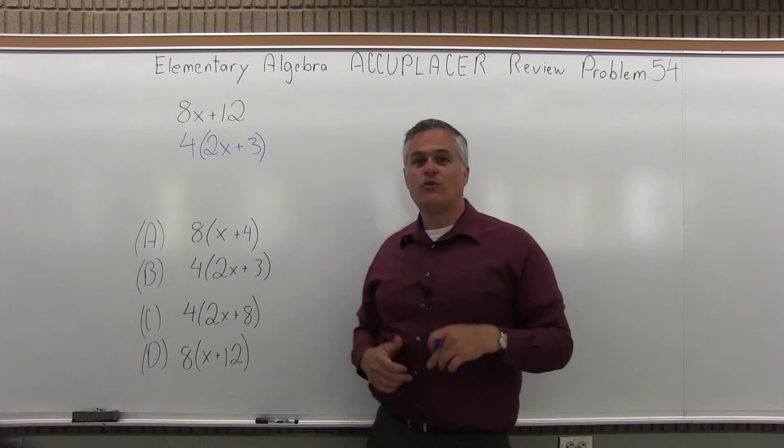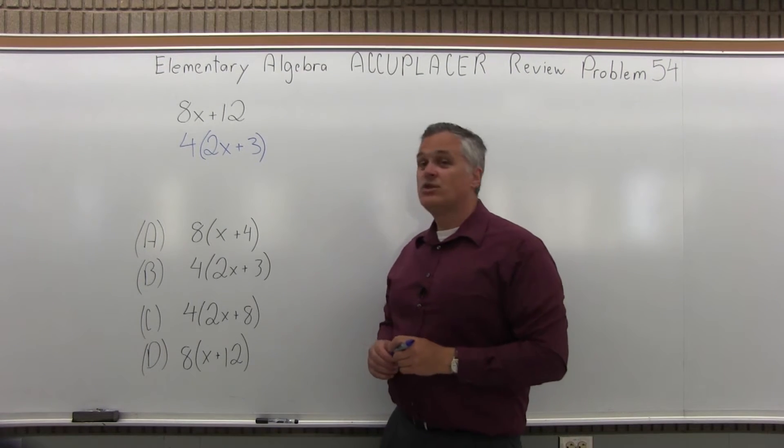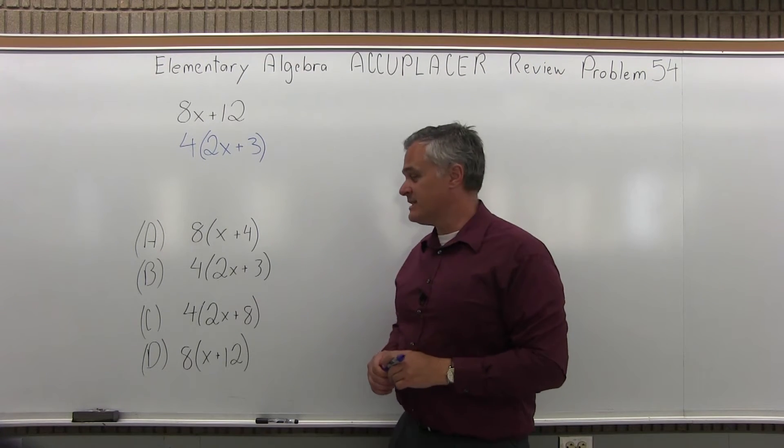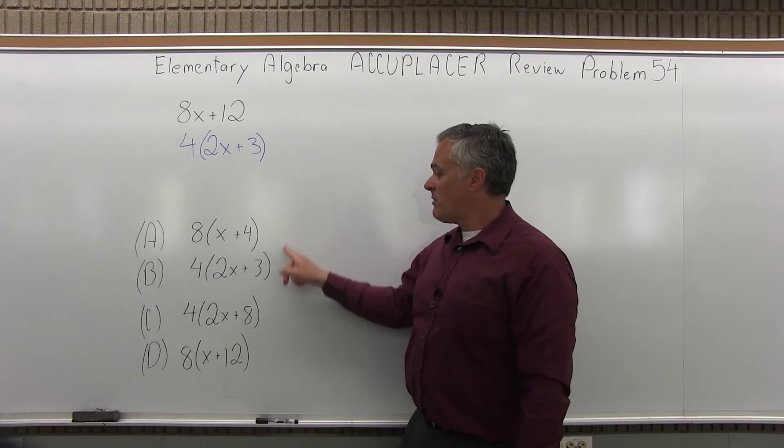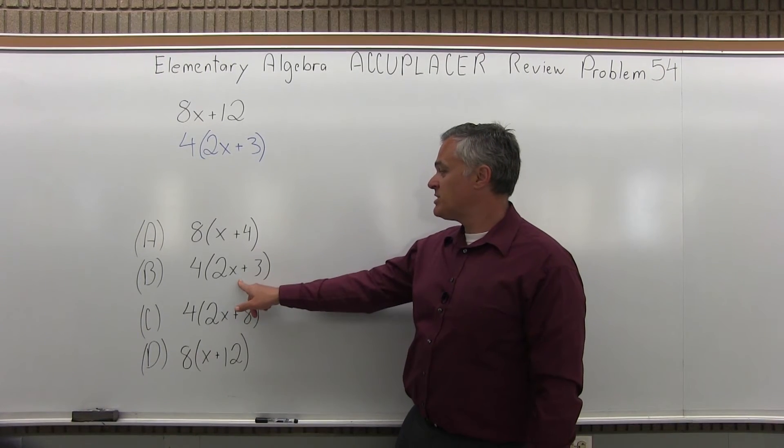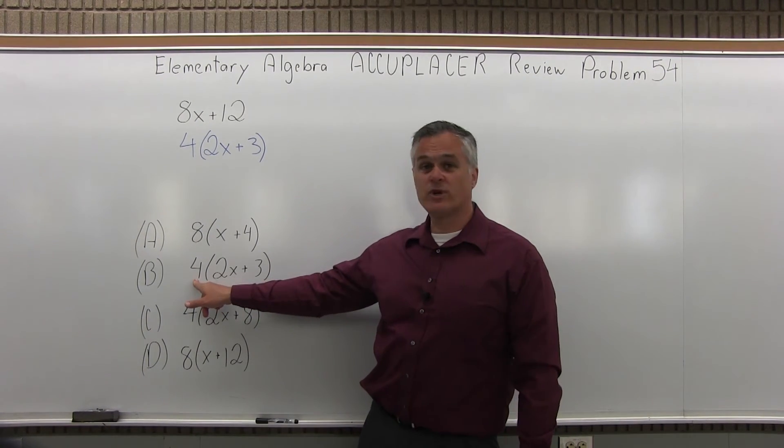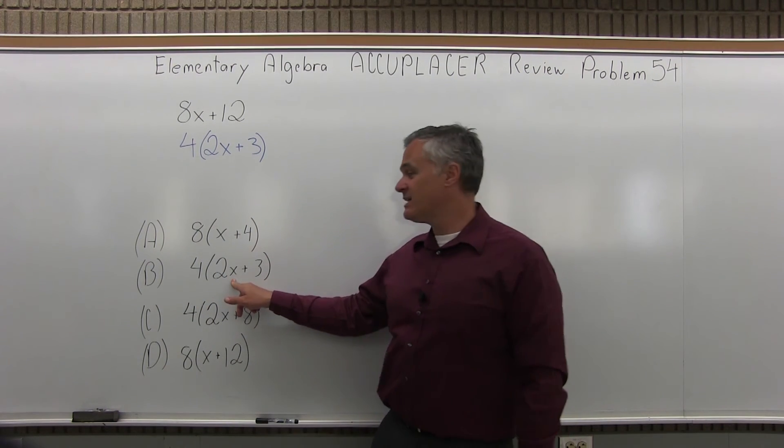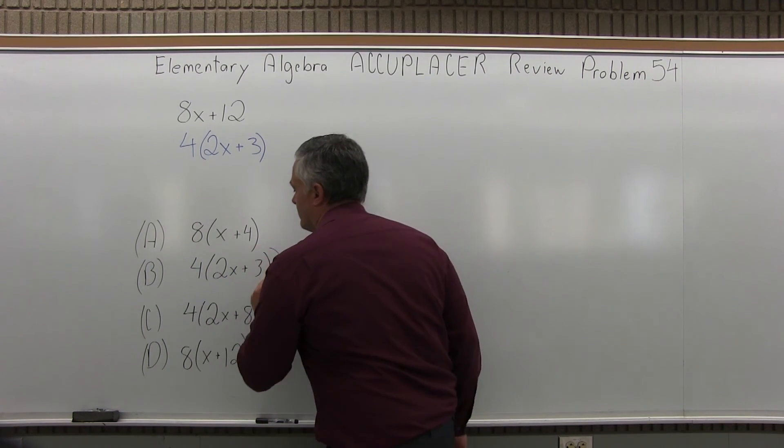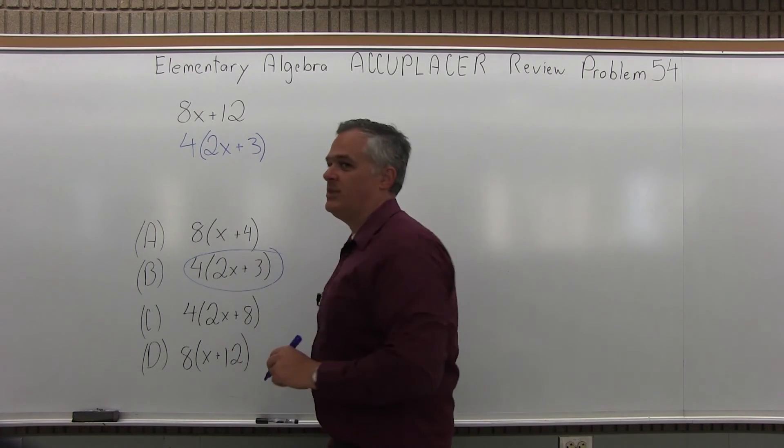So I get an answer of 4 in front of the parentheses and 2x plus 3 inside the parentheses. And if I look at my potential options, option B is a perfect match with a 4 in front of the parentheses and a 2x plus 3 inside the parentheses. So the answer for this problem is option B.